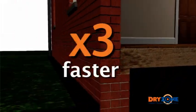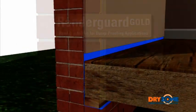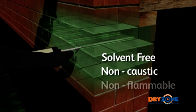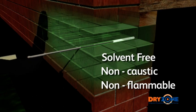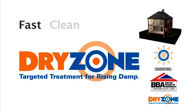Dryzone is three times faster to install than traditional chemical injection systems, minimising inconvenience and disruption to the householder. Because it is solvent-free, non-caustic and non-flammable, it is also safer to use. Dryzone, the fast, clean and effective treatment for rising damp.